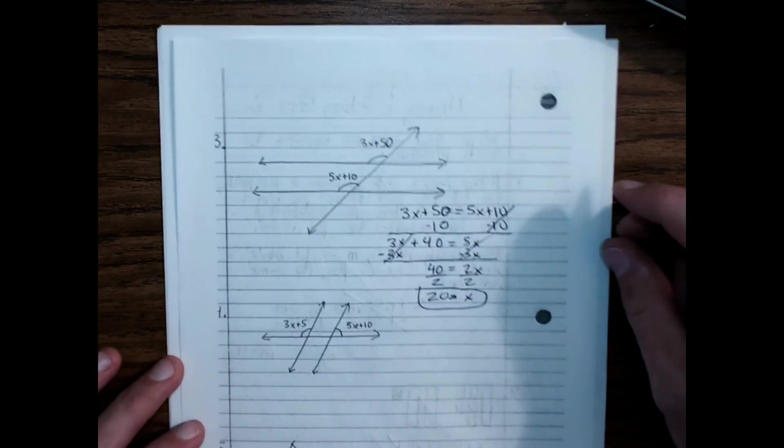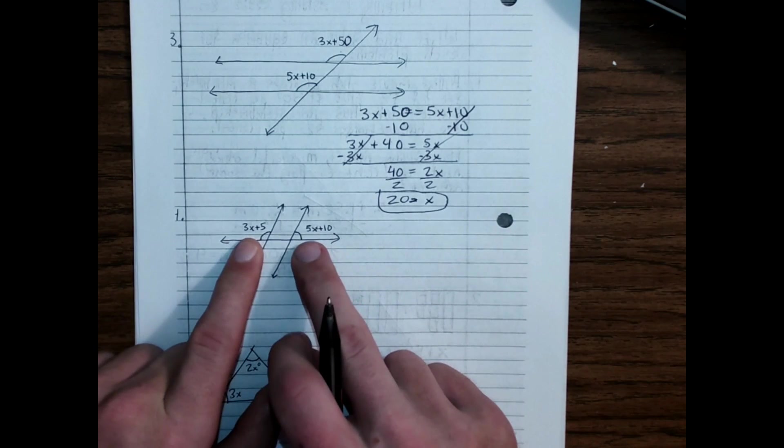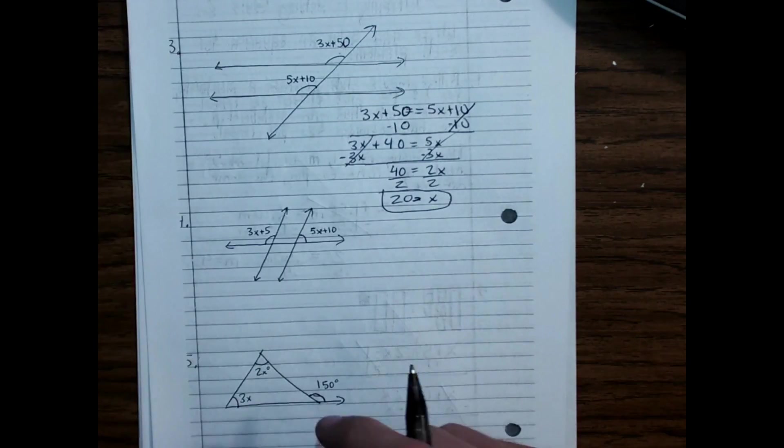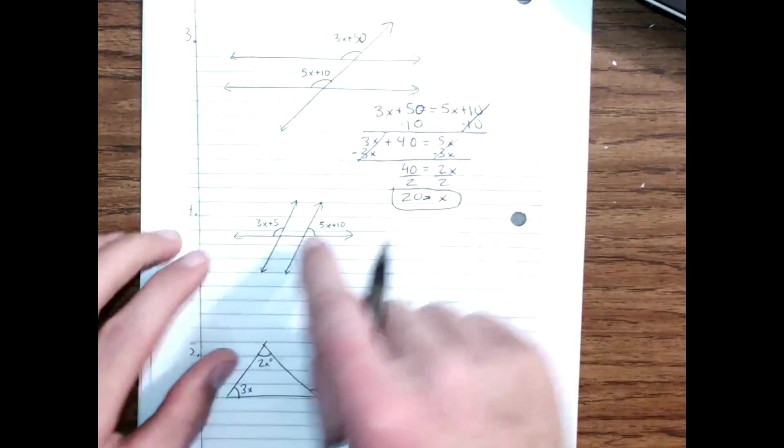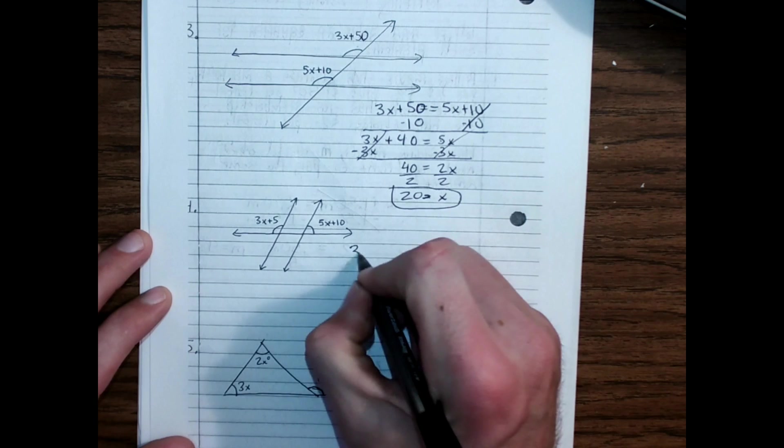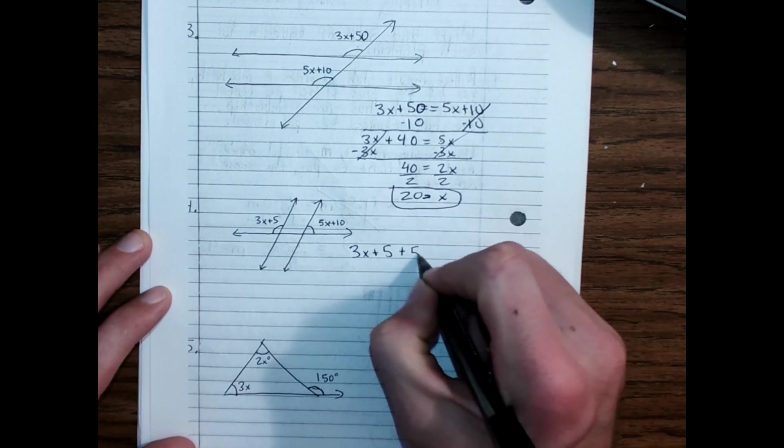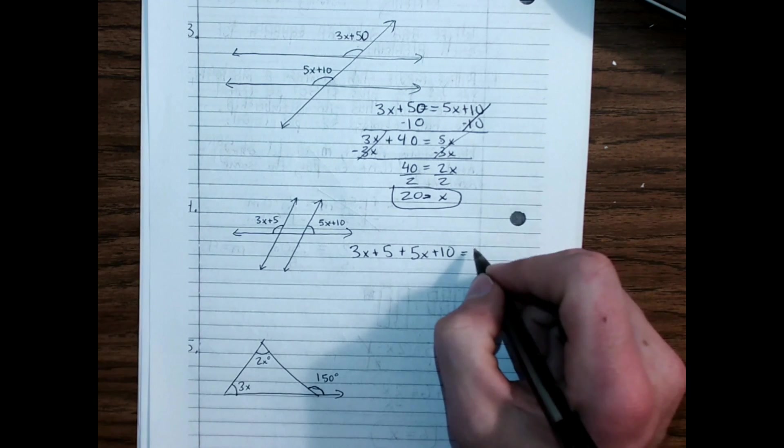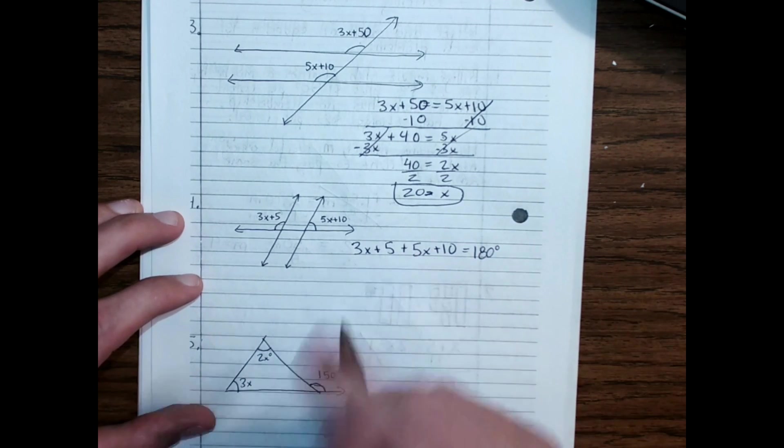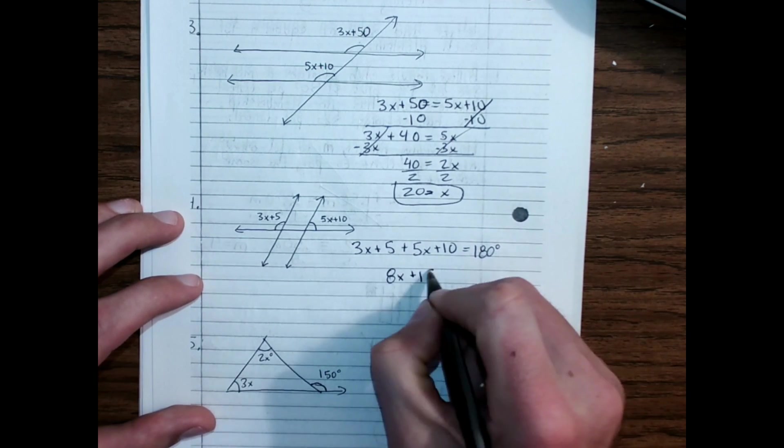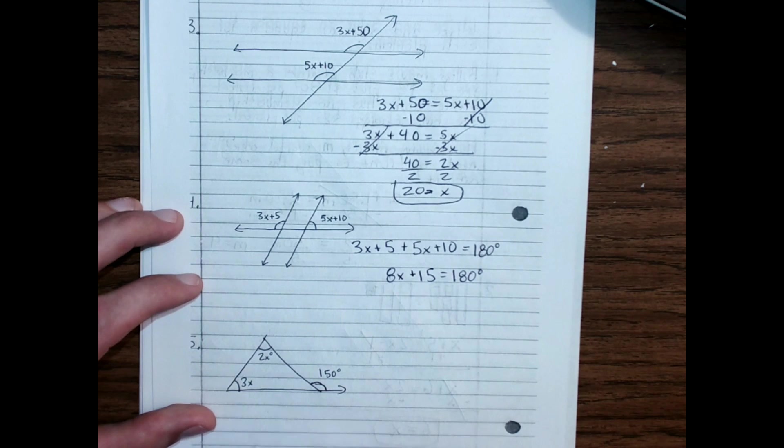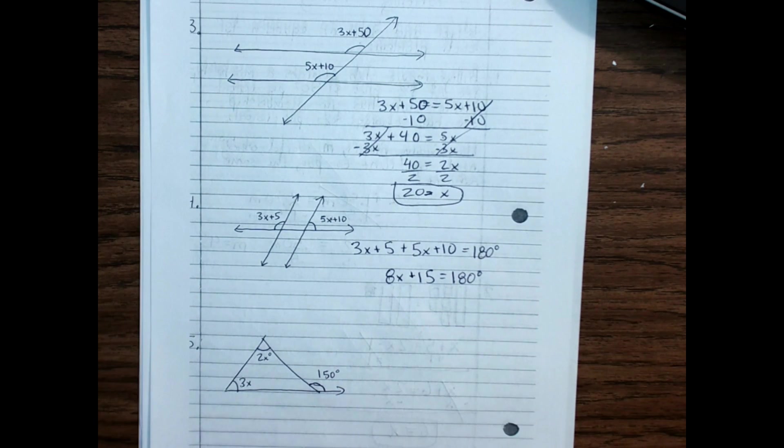It's possible I did that by accident on tomorrow's quiz as well. These two are supplementary angles. It's the same as our notes. Just turned to the side. If you push these two lines together, this would make one straight line. This angle and this angle would come together to make one straight line. So 3X plus 5 plus 5X plus 10 should equal 180 degrees. 3X and 5X is 8X. 5 and 10 is 15. So 180 degrees is equal to 8X plus 15.